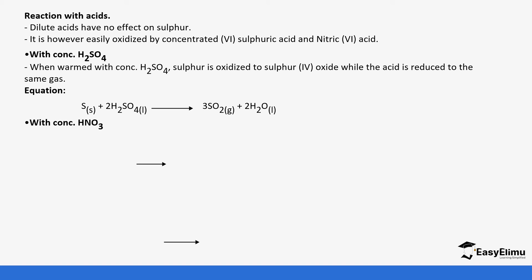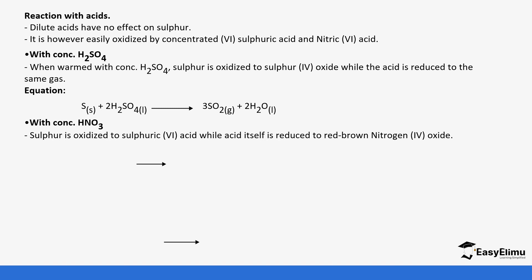With concentrated nitric acid, reacting it with sulfur oxidizes sulfur to sulfur dioxide, and the nitric acid itself is reduced to nitrogen dioxide. So when sulfur reacts with nitric acid it forms sulfuric acid and nitrogen dioxide in water. There is a clear distinction: with sulfuric acid a gas (SO₂) is produced, while with nitric acid an acid (H₂SO₄) is formed in solution.